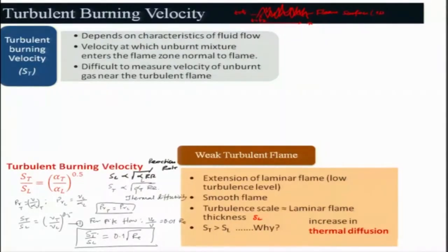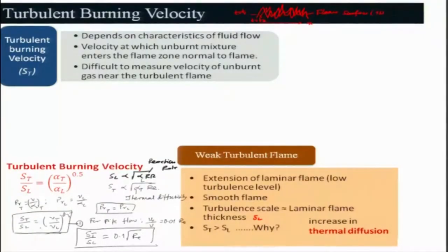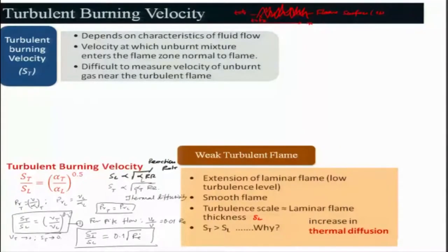Keep in mind that this model has a limitation. If ν_t or α_t tends to zero — meaning there is no turbulence — then S_t will tend to zero as well. When the Reynolds number is very small or tends to zero, the turbulent velocity would have no meaning. When ν_t tends to 0, S_t tends to 0, which is physically incorrect. That is the limitation of this model.